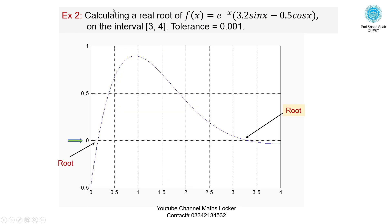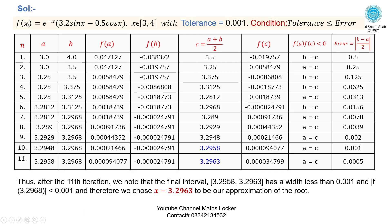Exercise number 2: Calculate a real root of f(x) = e^(-x) · 3.2·sin(x) - 0.5^6, on the interval [3, 4] with tolerance 0.01. Sketch the graph — the interval is given. From the graph, the real root lies in the interval [3, 4]. f(x) = e^(-x) · 3.2·sin(x) - 0.5^6, with x in [3, 4].